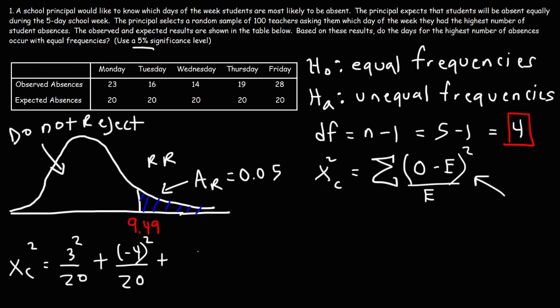14 minus 20, that's going to be negative 6. And next, we have 19 minus 20, which is negative 1. And then for Friday, we have 28 minus 20, which is positive 8.